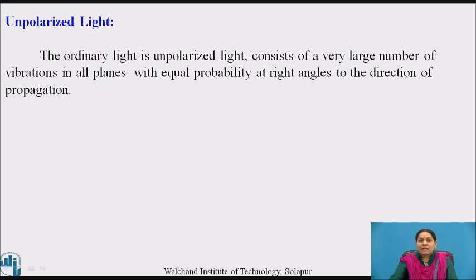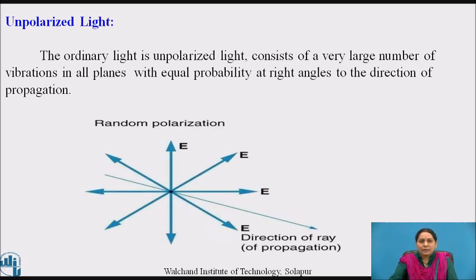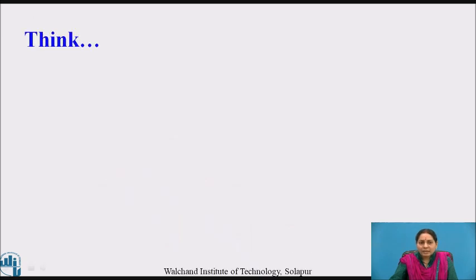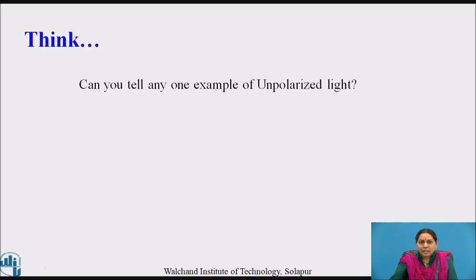Let us see what is unpolarized light. Unpolarized light is light which oscillates in more than one plane with equal probability, at right angles to the direction of propagation. Think for a while — can you tell any one example of unpolarized light?